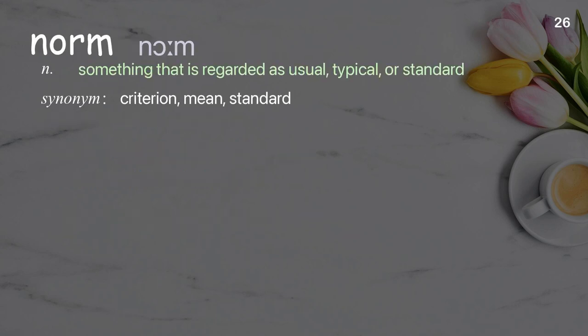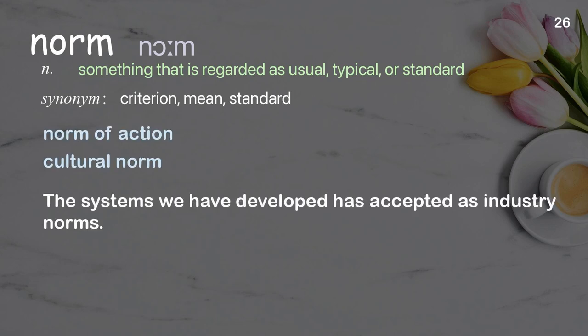Norm: something that is regarded as usual, typical, or standard. Examples: norm of action, cultural norm. The systems we have developed have been accepted as industry norms.